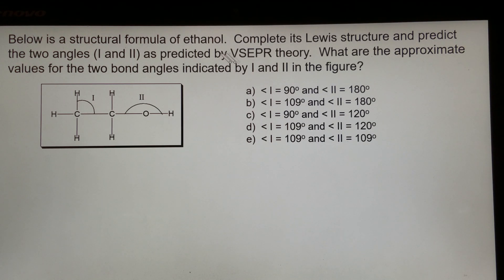As predicted by VSEPR theory, VSEPR theory is a valence shell electron pair repulsion theory. What are the approximate values for the two bond angles indicated by angle one and angle two in the figure?